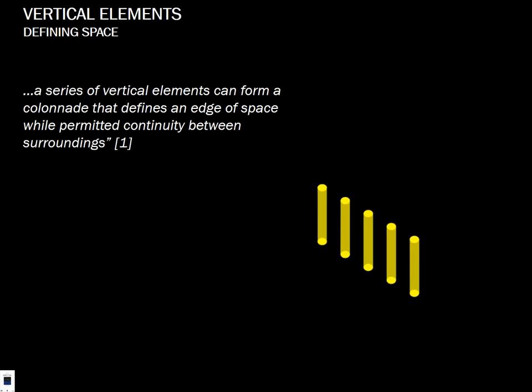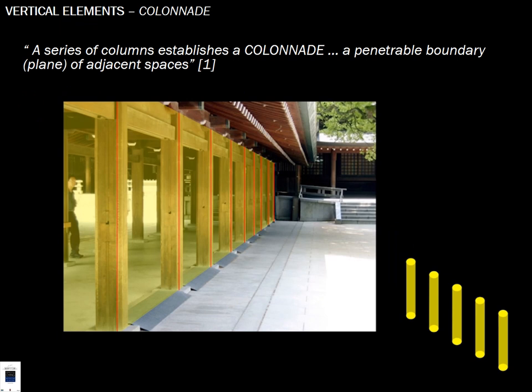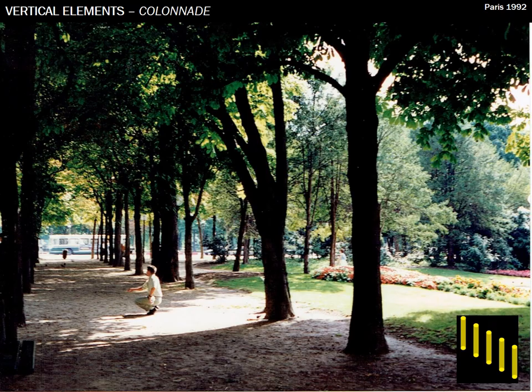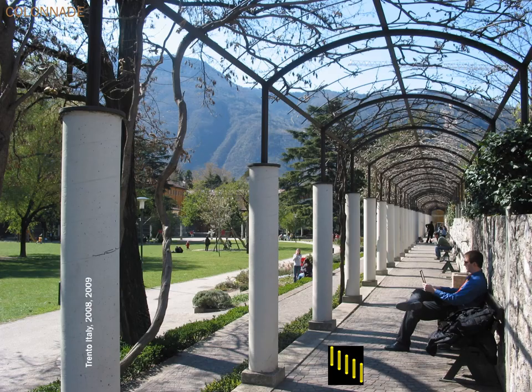Vertical elements can create a virtual wall or plane through a cascade of columns — a colonnade. You maintain an indoor-outdoor flow while still establishing a penetrable boundary that defines the edge of the space. A colonnade of trees can have the same effect. Pictures from Paris 1992 illustrate this principle.